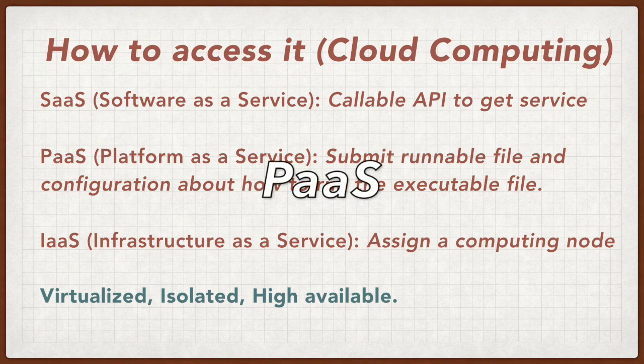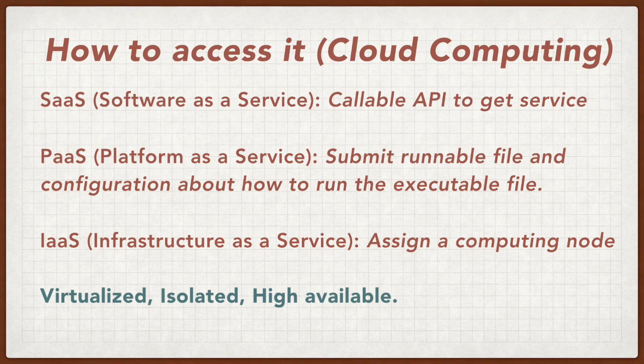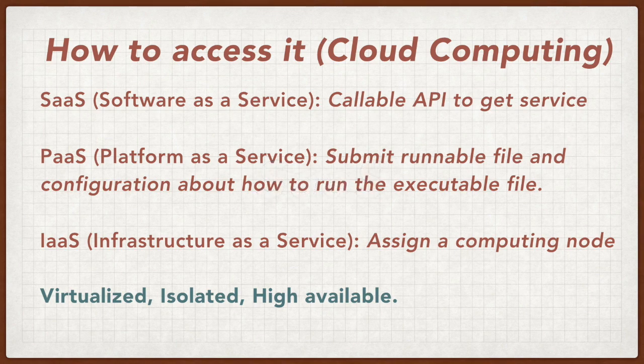The second layer is called PaaS, namely Platform as a Service. In this layer, the user just needs to provide configuration files that describe how to run their executable files, and the platform is in charge of resource scheduling and high availability of the program. The next layer is called SaaS, namely Software as a Service. In this scenario, the user just needs to call an API to interact with services provided by the cloud computing provider, such as storage services or data monitoring services.